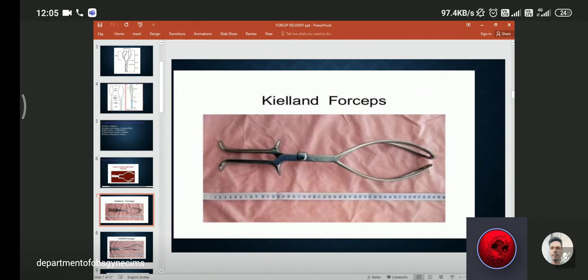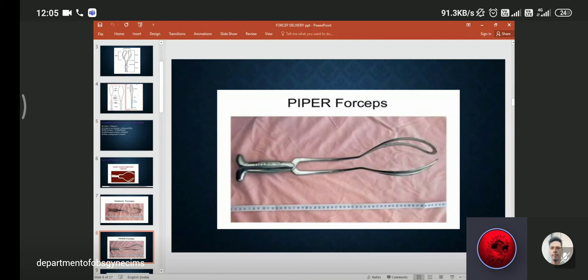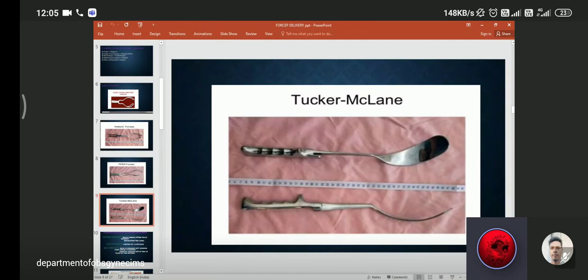This is Kielland forceps. You can see the length of the forceps is quite more than the outlet forceps, and the curve of the pelvis is also there and the blade's length is also more than the outlet forceps. This is Piper forceps to remove the after coming head of breech. And this is Wrigley method forceps, usually used in cases of C-section while difficulty in removal of head, so we can use this blade for removal of fetal head.